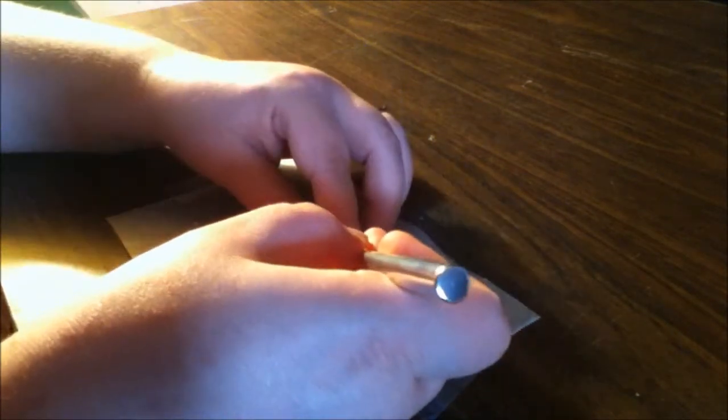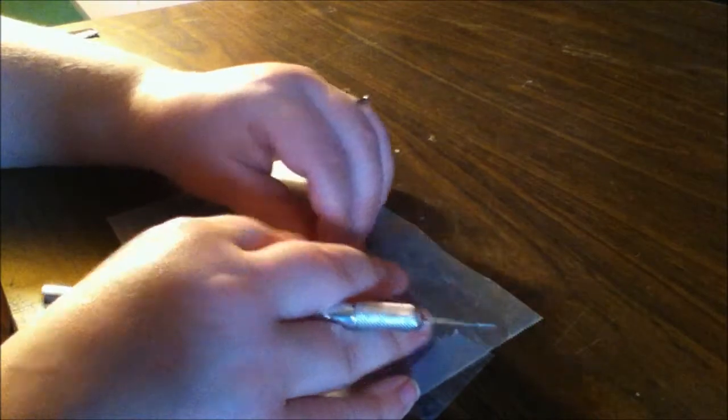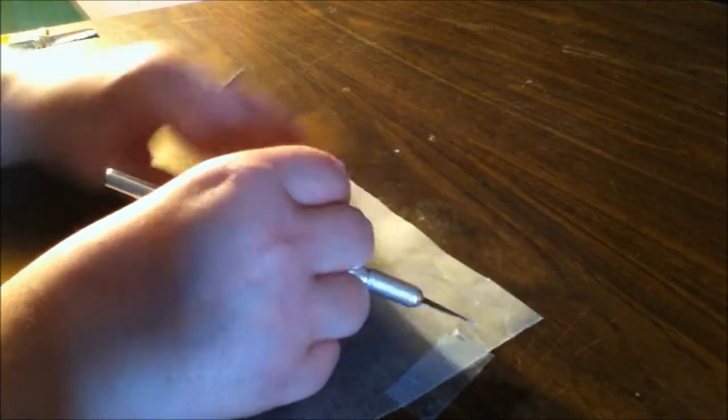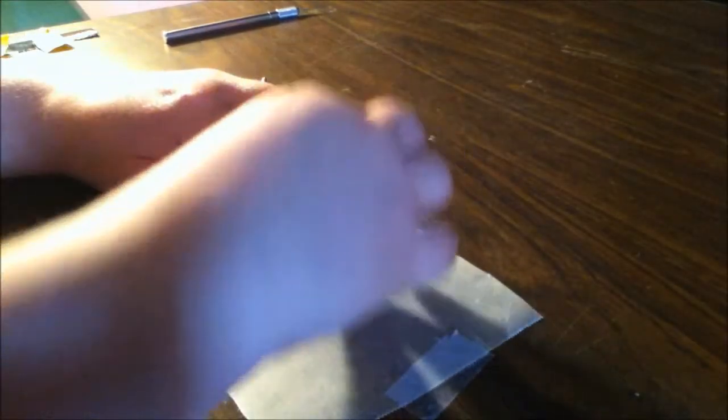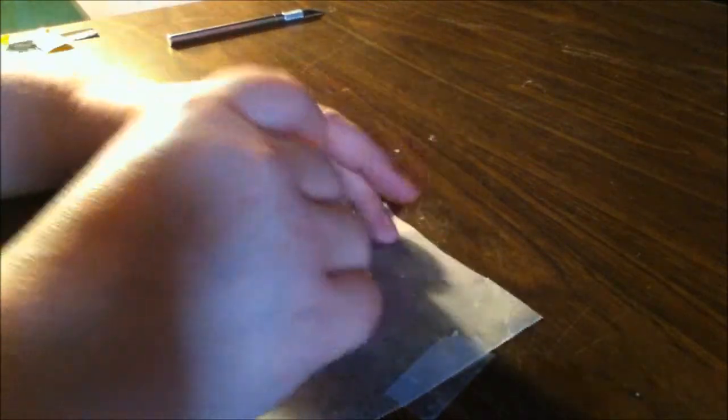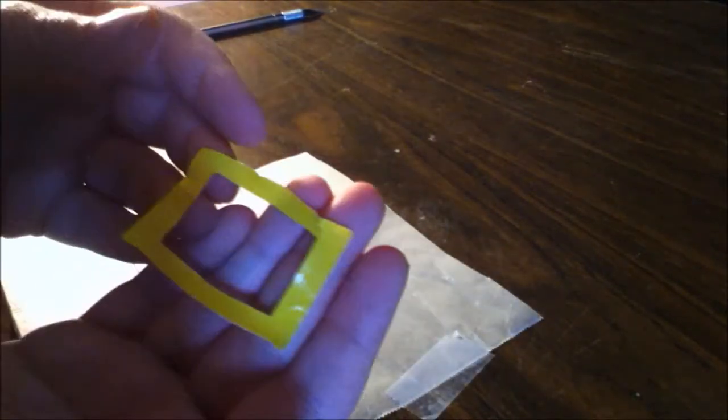And then you just pluck it out and you have your buckle shape. So now you just carefully take this off the wax paper. So you have your buckle.